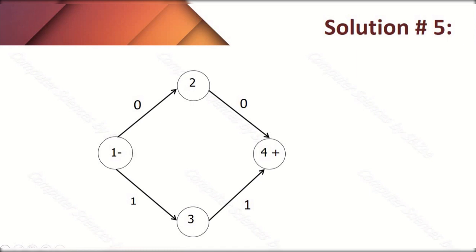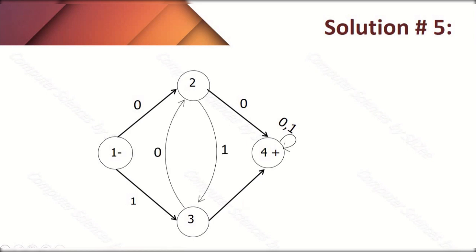Question number five involves a language over {0,1}. At the zero state we can get double zeros or double ones. At state 2, one transition is missing, so we move it towards state 3 because at any other state our condition would be disturbed. The same applies for state 3 with transition 0. All states now have complete transitions, so this finite automaton is deterministic.